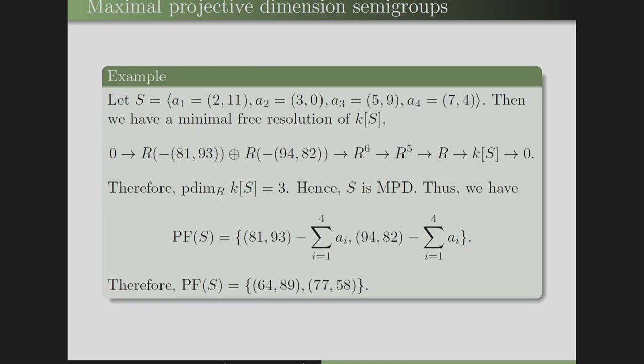For example, let S be generated by (2,11), (3,0), (5,9), and (7,4). By Macaulay2, the minimal free resolution gives graded Betti numbers of the second syzygy module at degrees 81, 93, and 94, 82. By the previous theorem of Garcia, PF(S) consists of (81,93) minus the sum of generators, (94,82) minus the sum of generators, and related elements.